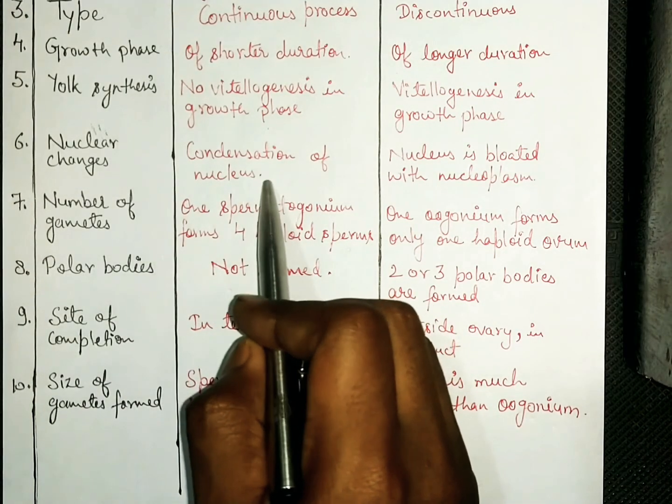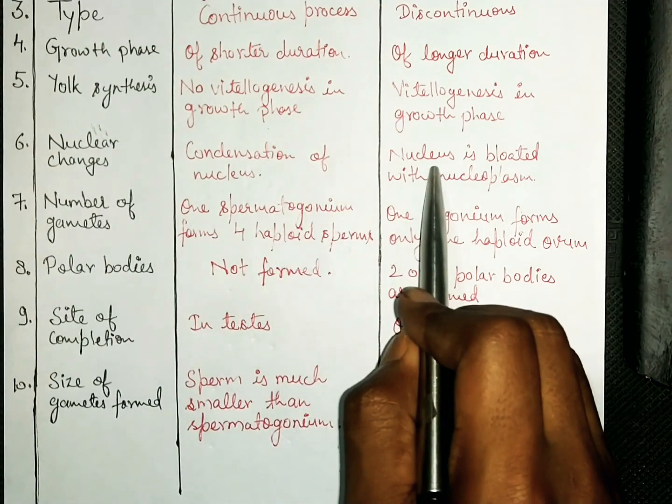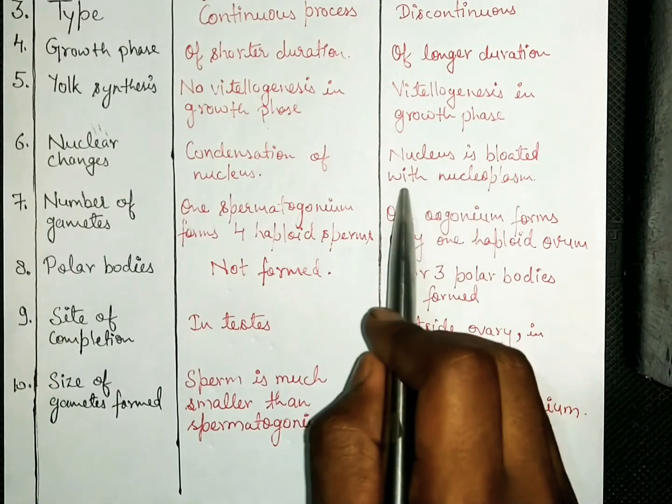Nuclear changes की बात करें, तो in spermatogenesis, condensation of nucleus occurs in sperms. While in oogenesis, ovum के nucleus में nucleoplasm का amount जादा होता है.